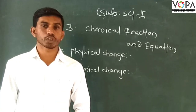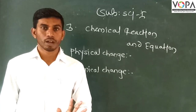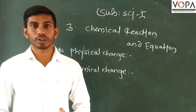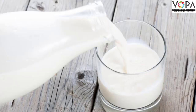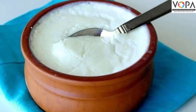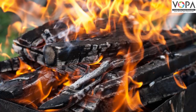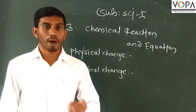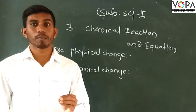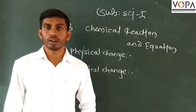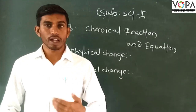The changes are irreversible. For example, milk is converted into yogurt — milk is converted into yogurt. Another example is the burning of food. This is a chemical change, and the changes are chemical changes.